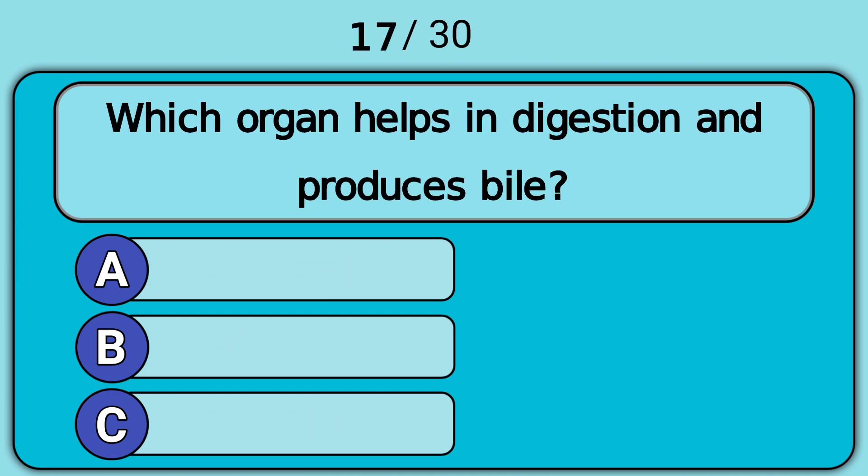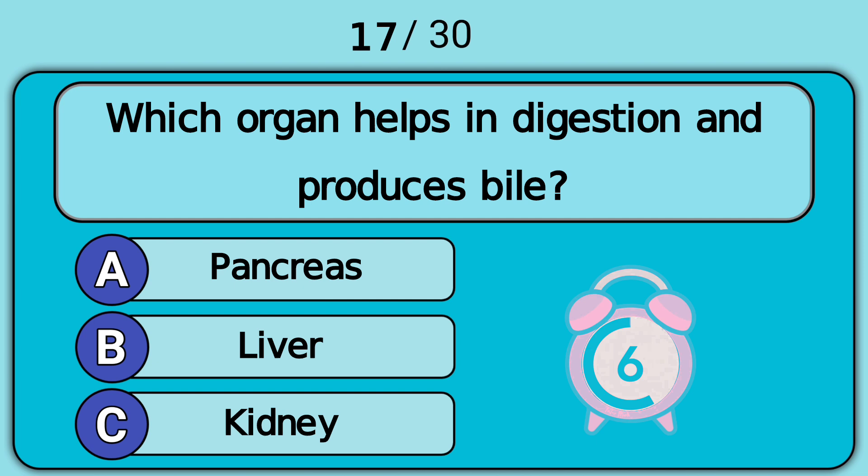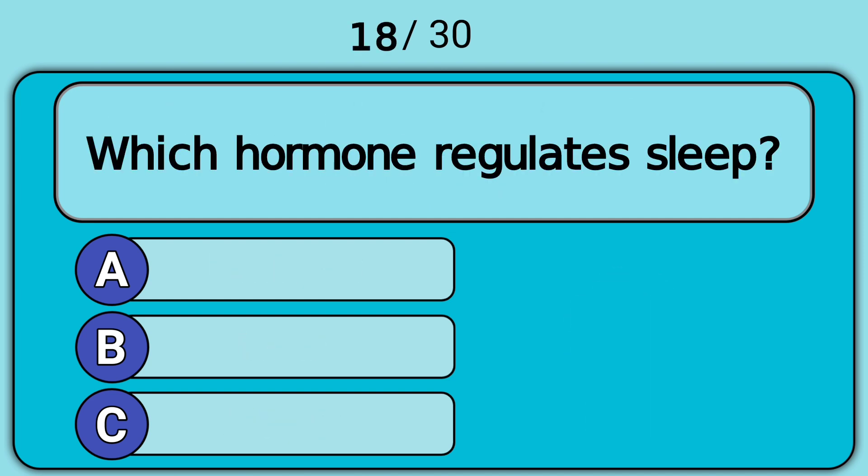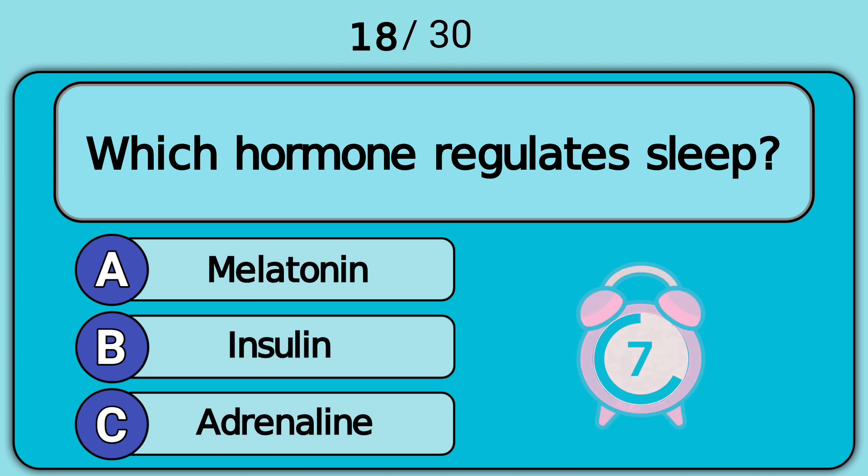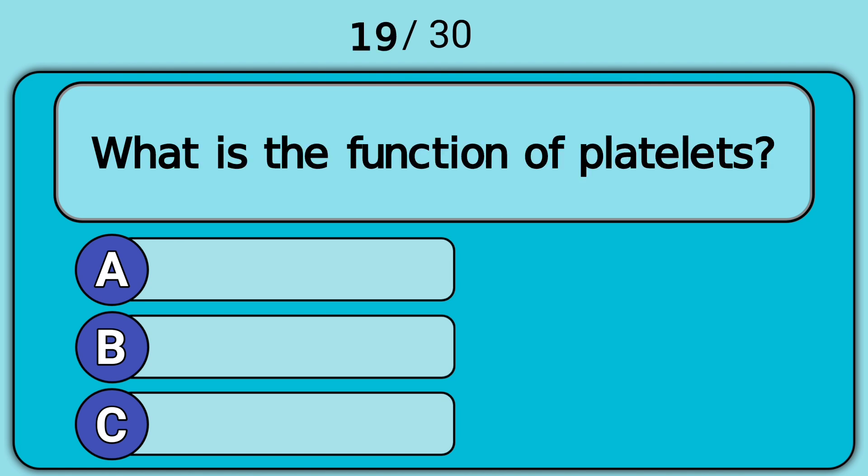Which organ helps in digestion and produces bile? Which hormone regulates sleep? Answer A. Melatonin.